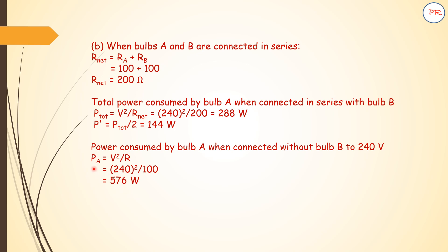So it consumes 576 watts when alone, but when in series with B, it consumes 144 watts (288 divided by 2). So we have to write the correct answer as P' is less than P_A. The brightness of bulb A decreases when connected in series with bulb B. This is what we have to understand: brightness depends on power. Where there is more power consumption, brightness will be more.